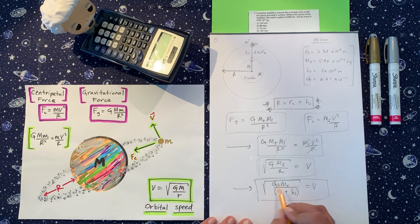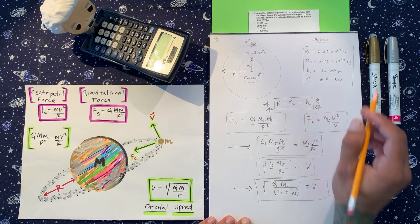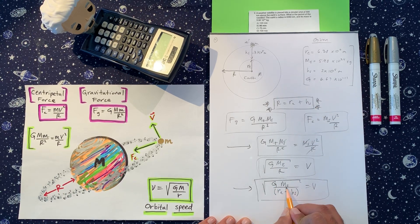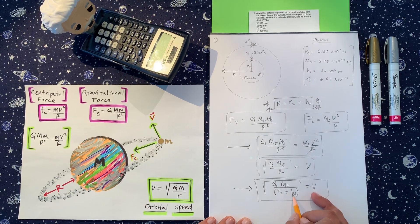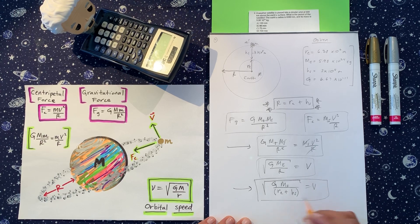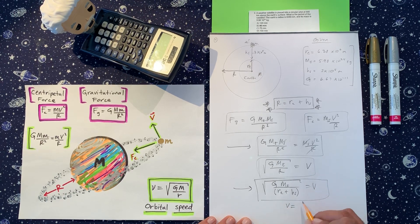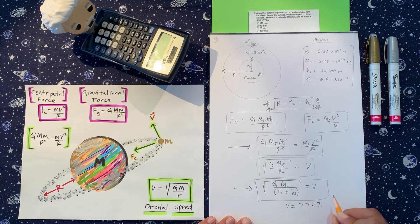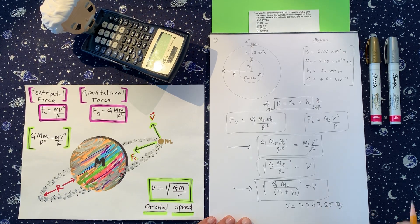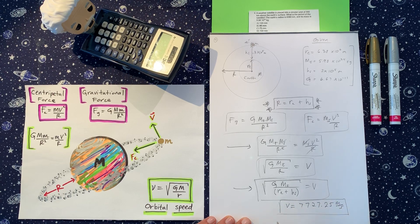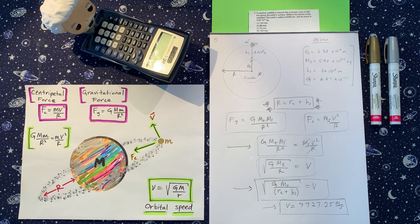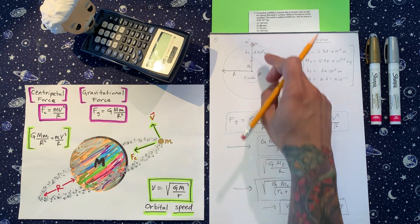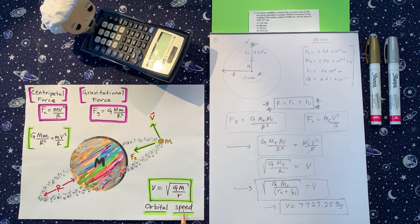Okay, so plugging in all the numbers, you have the gravitation constant, we have the mass of the Earth given, radius of the Earth is given, and height of the satellite is given. So plugging all that in, we should get velocity of the satellite is 7727.25 meters per second. Slow, slow movement. No, I'm just kidding. This is fast. But space terms, it's kind of slow. All right, so this is the velocity of the satellite orbiting. So the orbital speed.